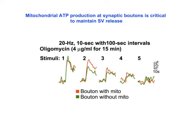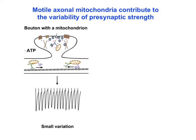We next treated neurons with oligomycin, an inhibitor of mitochondrial ATP generation. Synaptic vesicle release was reduced at boutons when mitochondrial ATP production was blocked, a phenotype mimicking boutons lacking mitochondria. We also showed that when neurons were firing, ATP consumption was enhanced, followed by quick recovery at terminals with mitochondria. In contrast, within mitochondria-free boutons, we observed only partial and delayed ATP recovery.